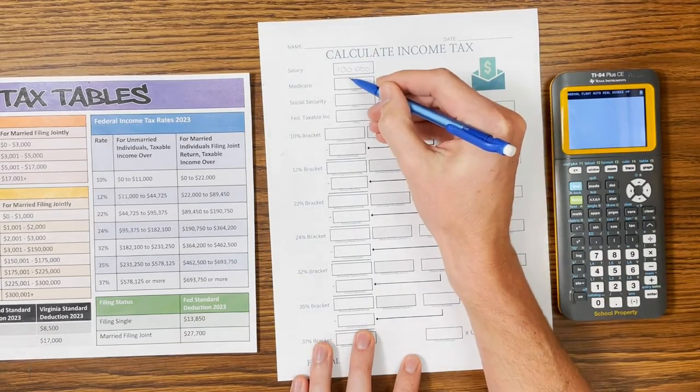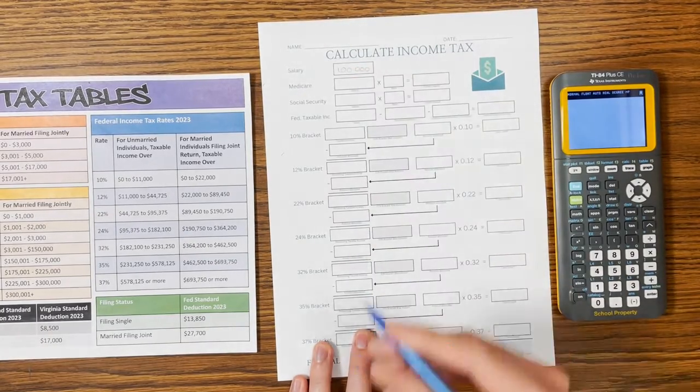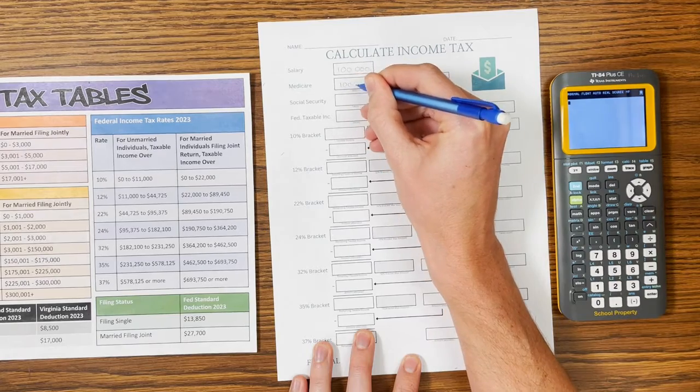Next up, you have our FICA taxes, which are Medicare and Social Security. So in this one, you're going to transfer your salary down once more.